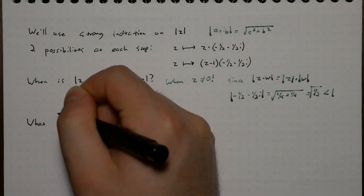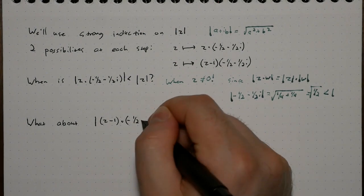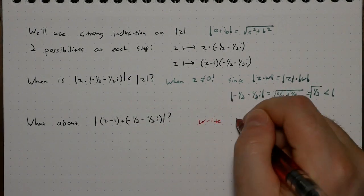What about the case where we subtract 1 first? Well, that's more interesting. We'll write our complex number as a plus i b.